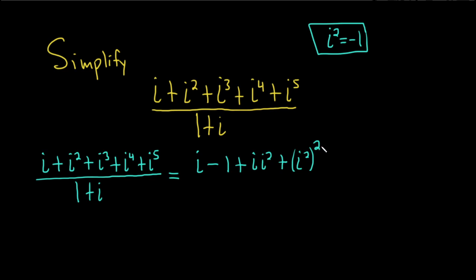Properties of exponents say, you know, you would multiply here 2 times 2, and that gives you 4.